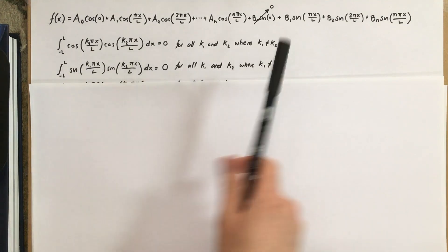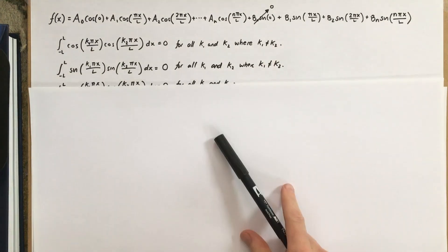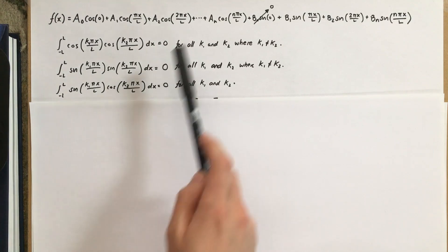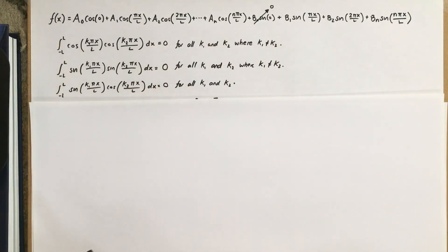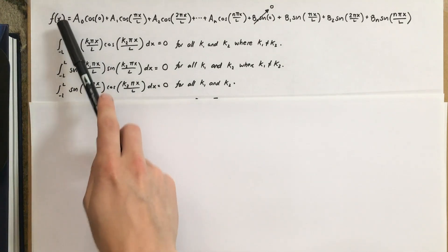And similarly with sine, we can do the same thing to show that all of these are orthogonal. And also, with sine and cosine, we can show that these are orthogonal to each other. And remember, all of this is on the interval negative L to L, because that is the period of this periodic function f of x.